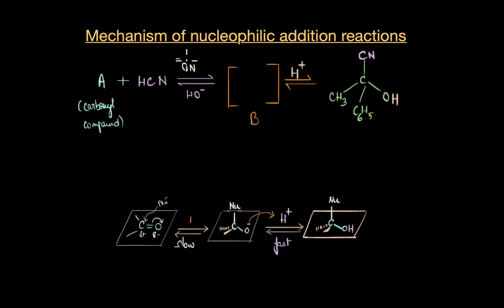And this reacts with A to give us an intermediate which finally gives us the cyanohydrin compound. So if you work it backwards the intermediate should have the same exact structure without the proton, correct.